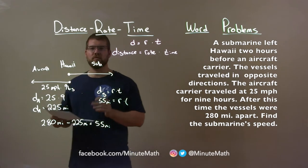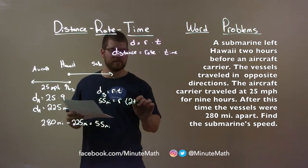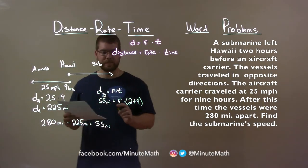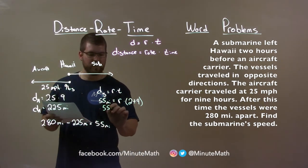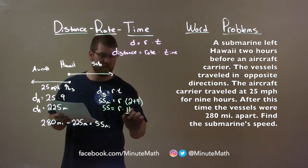Now the submarine was traveling two hours more than the aircraft carrier. So we have 2 plus 9 here for the time traveled for the submarine. 55 equals r times 2 plus 9 is 11. We now divide both sides by 11.